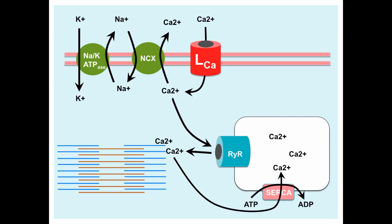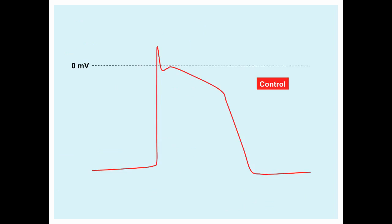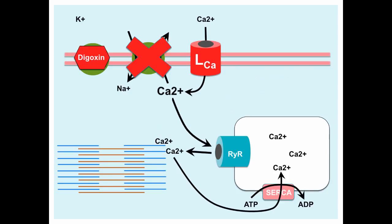Now let's look more carefully at the mechanism of action of digoxin. Digoxin selectively inhibits the sodium-potassium ATPase, leading to an increased intracellular level of sodium. This in turn inhibits the NCX transporter, which relies on a sodium gradient to function. Inhibition of the NCX transporter leads to increased levels of intracellular calcium. This leads to increased uptake by the sarcoplasmic reticulum via the SERCA pumps, followed by increased calcium release via the ryanodine-sensitive calcium channel on the sarcoplasmic reticulum. All of these events lead to increased calcium levels at the contractile elements and enhanced contraction of actin-myosin filaments — this is how digoxin increases contractility.